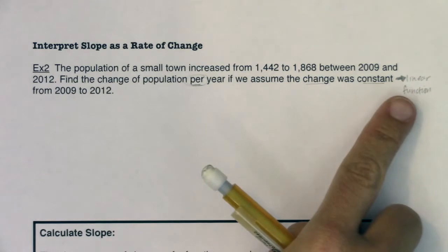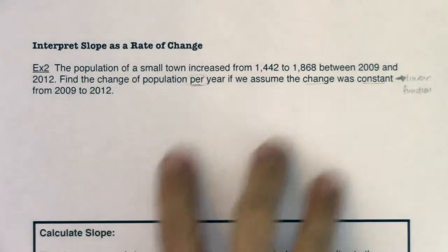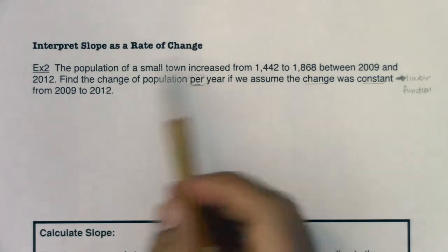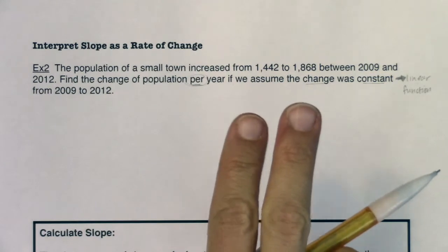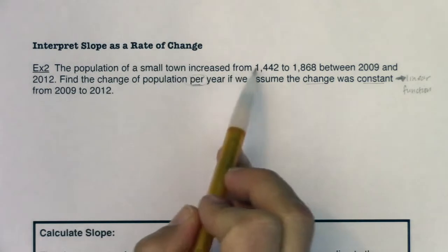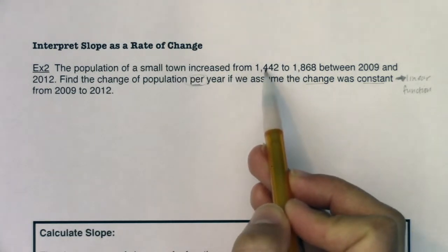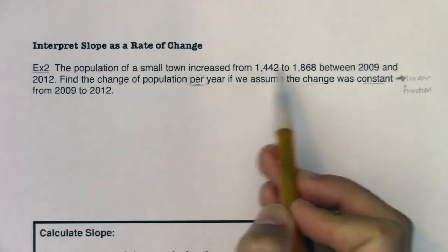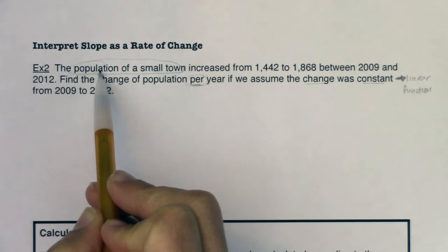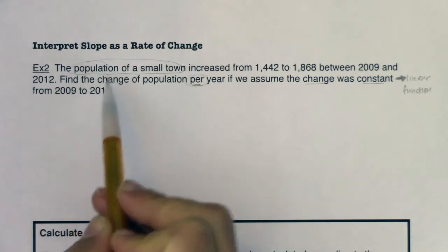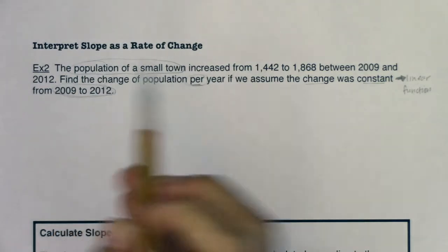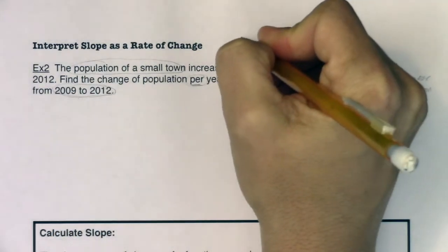slope of this linear function, and they gave me two ordered pairs. We just need to unpack them. What are my two variables here? If you read through this problem, there are two things that are changing. I think the first thing we can spot is that the population is changing, right? It was not constant - it increased from 1,442 to 1,868. So this population of this small town, that's one of my variables. But the other thing that was changing in this problem is time - it's year. It was changing from 2009 to 2012. So my two variables here are years